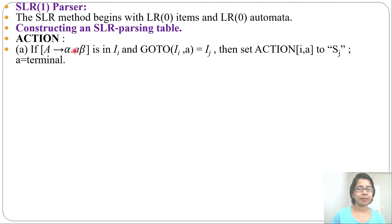So there are some rules of ACTION. First rule: if [A→α·aβ] is in Ii and GOTO(Ii, a) = Ij, then set ACTION[i,a] to "Sj" and 'a' would be terminal. It is same as LR(0) parsing table. If there is a GOTO, then write S with the state number, that is Sj. That Sj is for shift j.